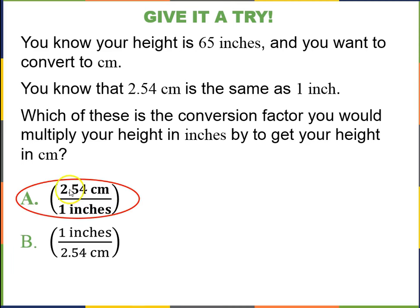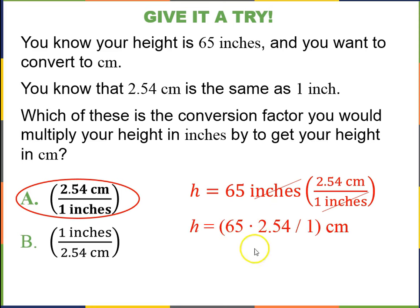Okay, so hopefully you chose A, 2.54 over 1, because your height, H, is in inches, which is on the top. You want to have inches on the bottom to cancel these out. And then centimeters is left on the top. So when you multiply it out, you get 165 centimeters.